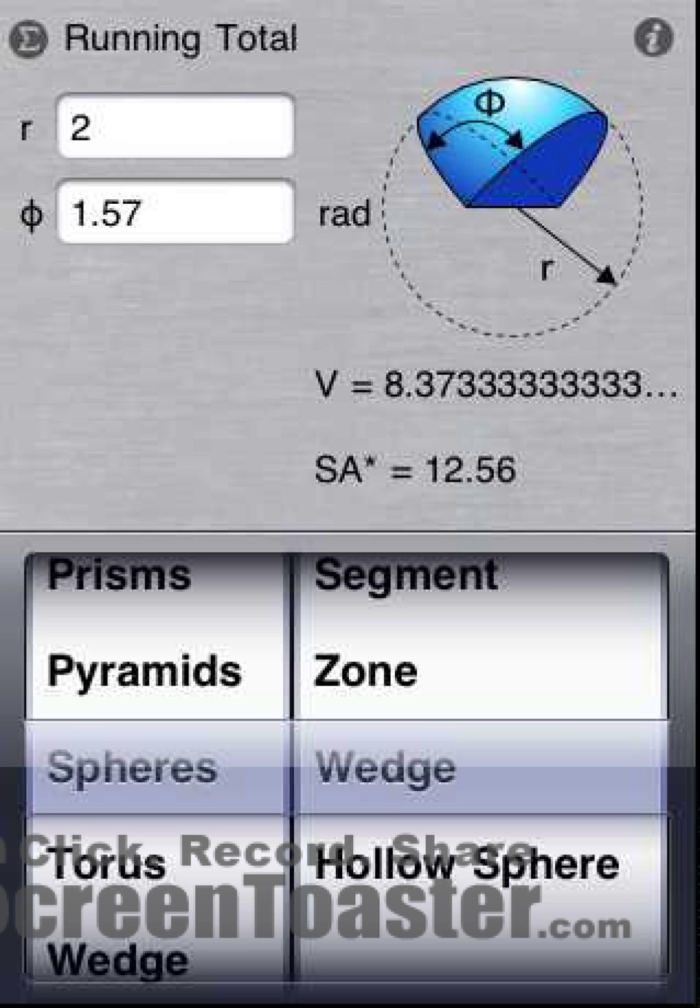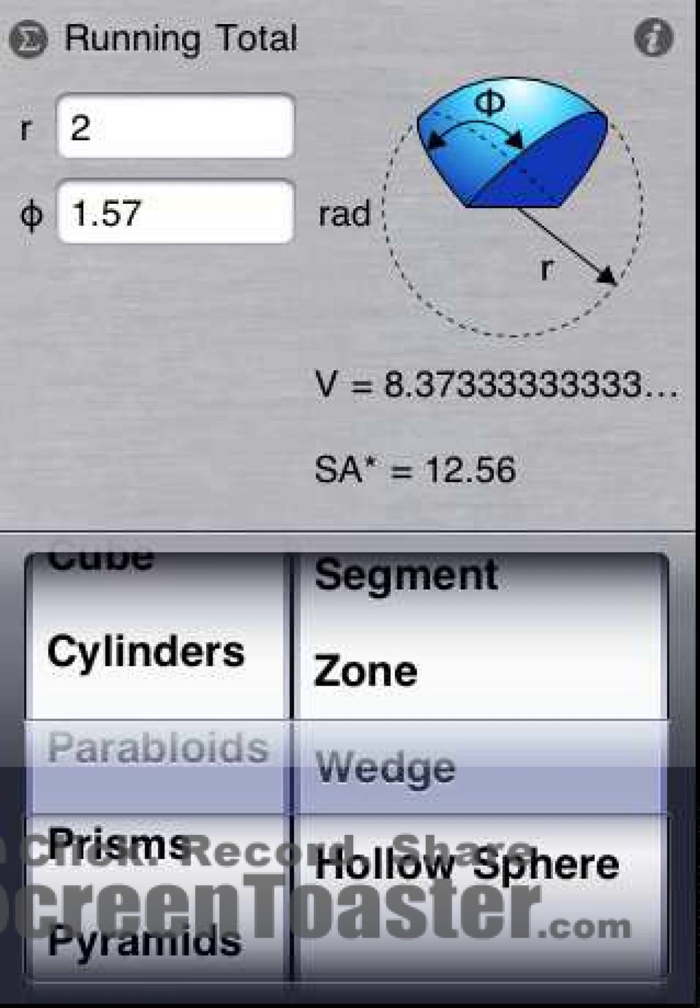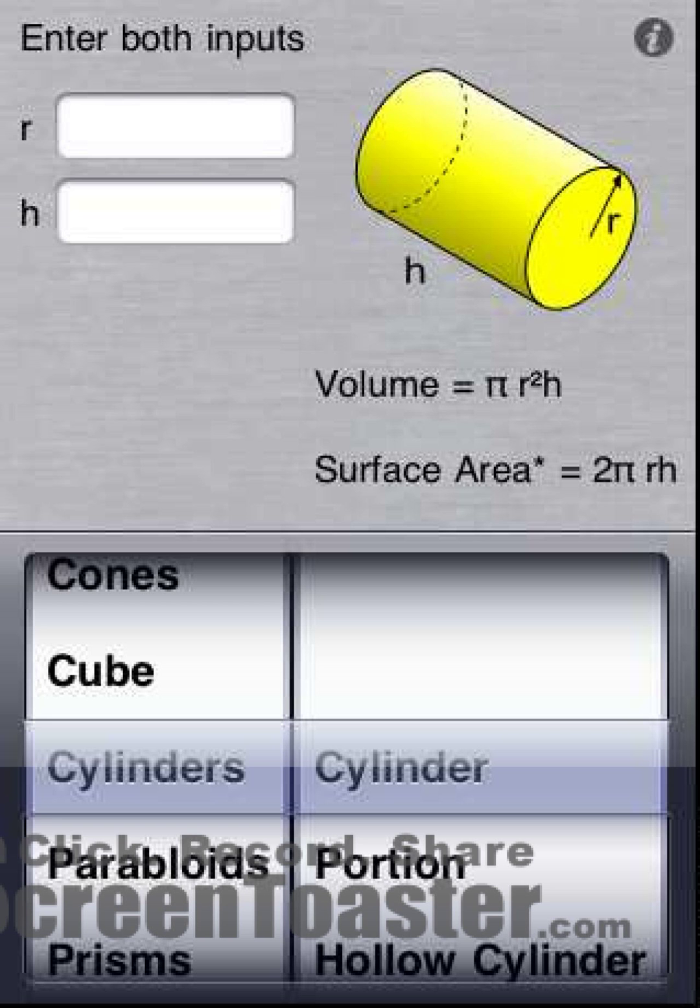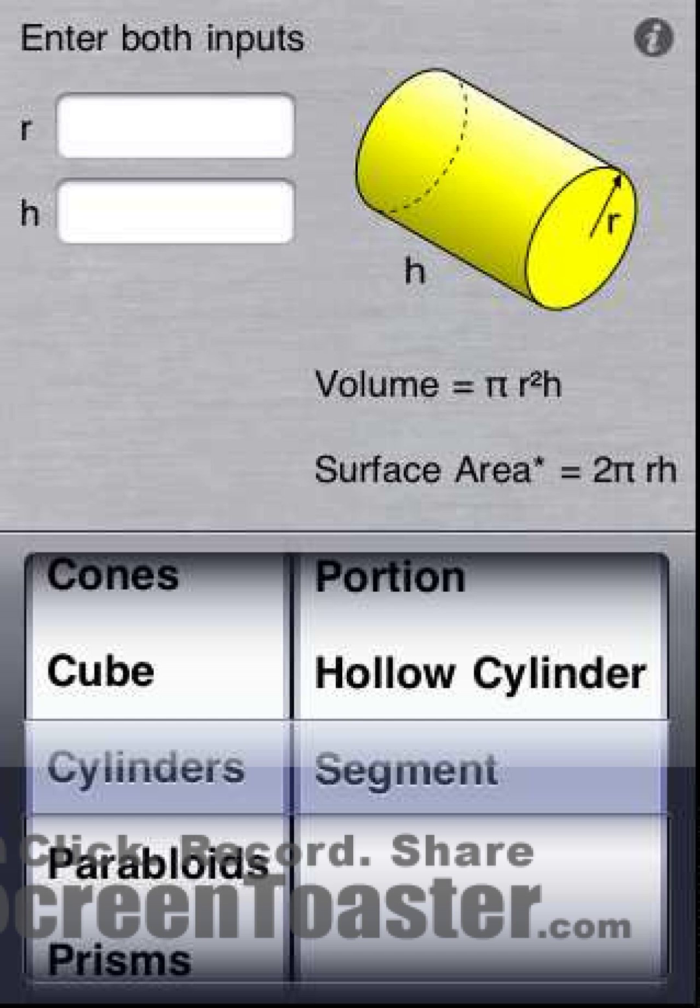Other shapes work the same way. Let's now select the segment of a cylinder. Select the cylinders category and let's select cylinder segment.